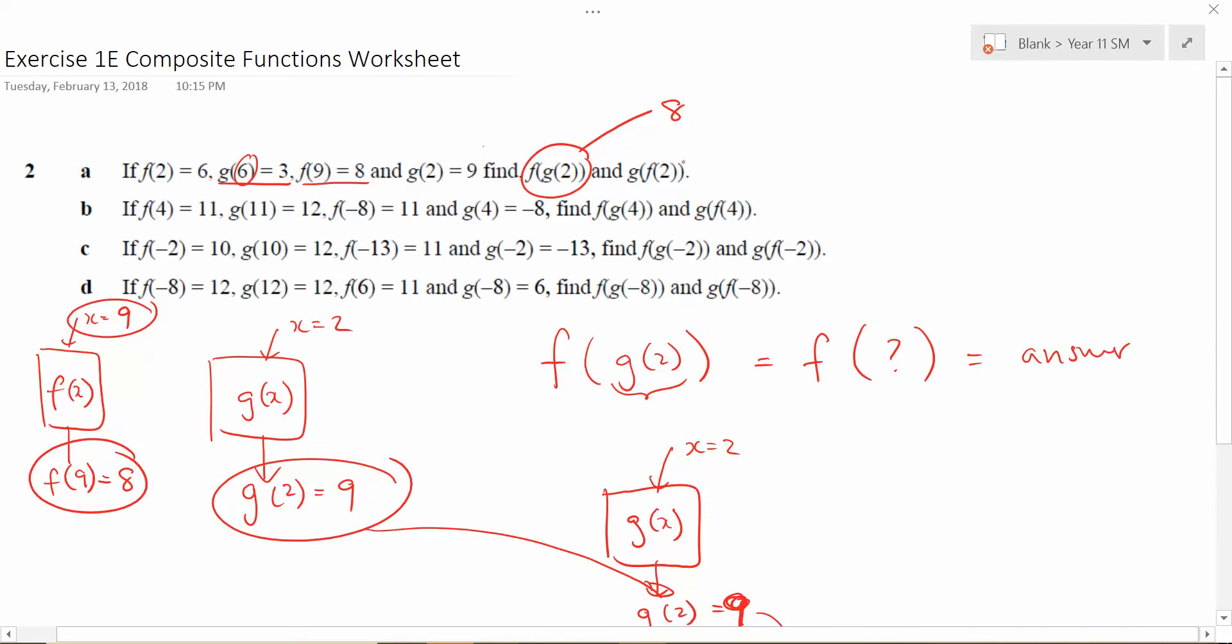And similarly, if you do the same thing for this one, you've got g of f of two. And similarly, you're really just saying, what's f of two equal to? And they already told you here, f of two is equivalent to six. So really, you're actually just finding g of six. But then they already told you as well that g of six is equivalent to three. So the answer there would have to be three.